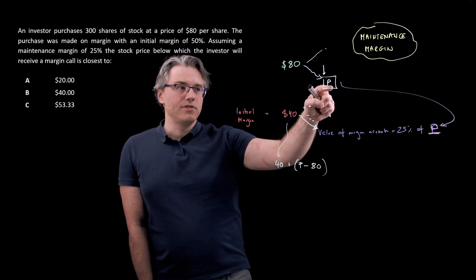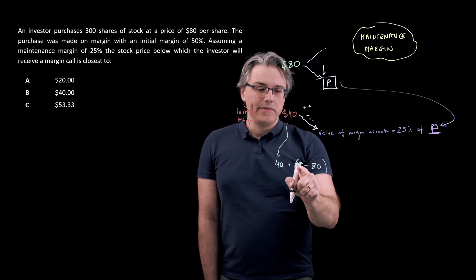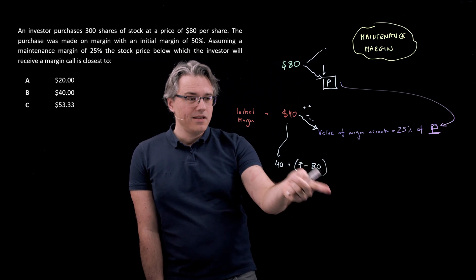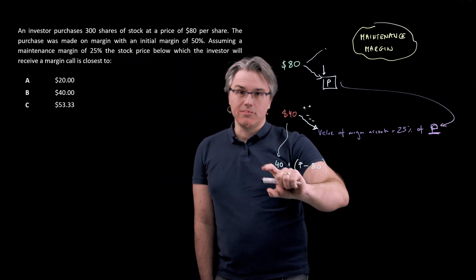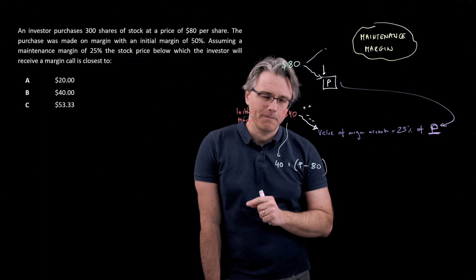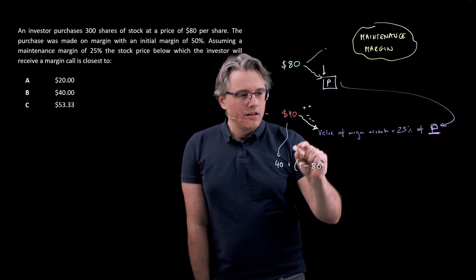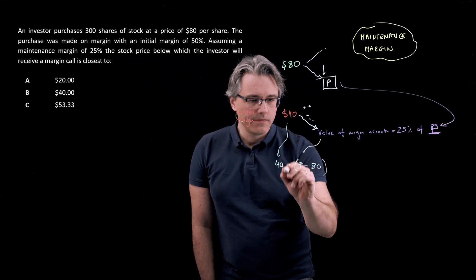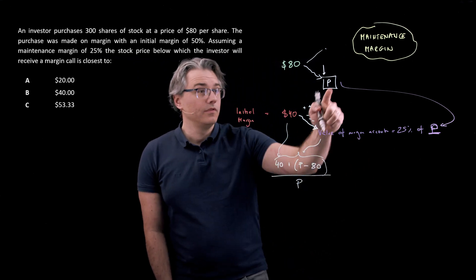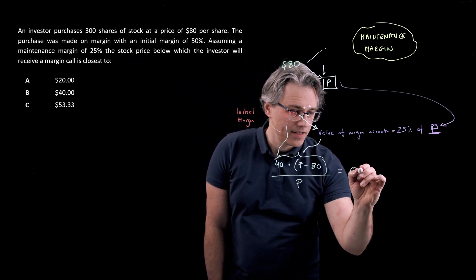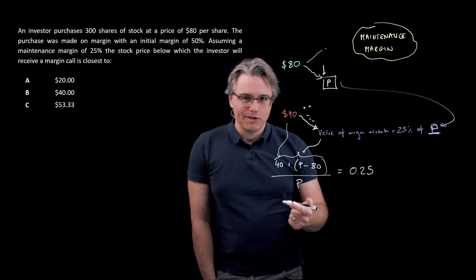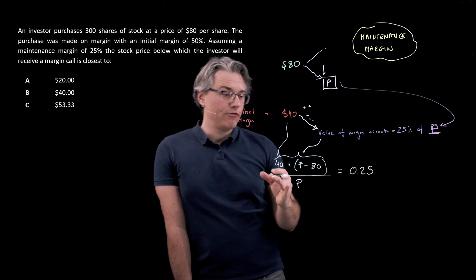If on the other hand, the stock price drops to 70, then that's going to be 70 minus 80, a $10 drop. And that's going to be deducted from the margin account. So this precisely expresses the level of the margin account as a function of what happens to the price of the stock. And I'm looking for a point at which the value of the margin account, which I've got over here, when you relate it to P, the current price level, satisfies the following relationship. It's at a level of 25% or 0.25. And from now on, it's going to be quite easy to transform this mathematically.